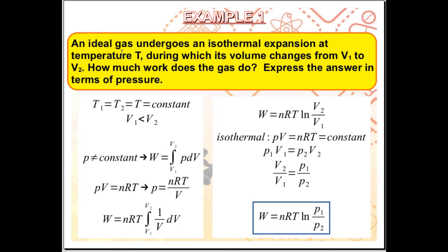And indeed, for an ideal gas, we can apply the ideal gas law, PV is equal to nRT. We can isolate P, which gives us P is equal to nRT over V.